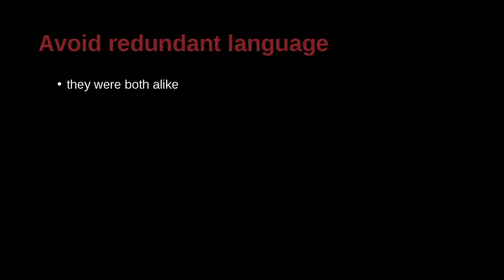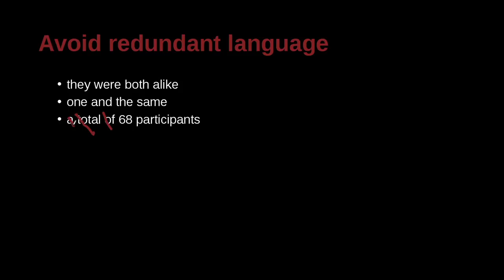Avoid redundant language — saying the same thing over again. 'They were both alike' uses 'they' and 'both' to mean the same thing twice. 'One and the same' — if they're the same, they must be one. 'A total of 68 participants' is the same as '68 participants,' so cut those words right out. 'In close proximity' — you can just say 'close' or 'in proximity,' not both. These are all examples of the same thing said twice.